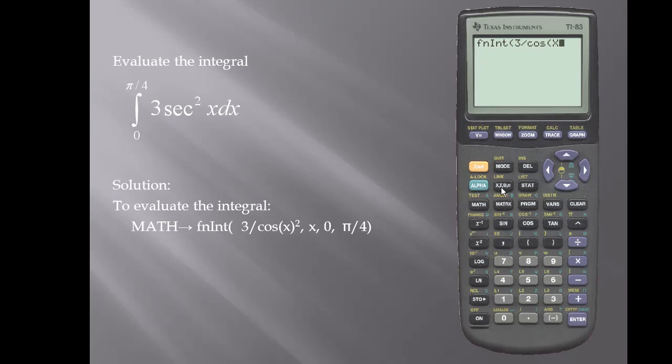I'll put in my argument X. I'll close off my argument and then I'll square it. I'll insert a comma. My variable of integration is X.